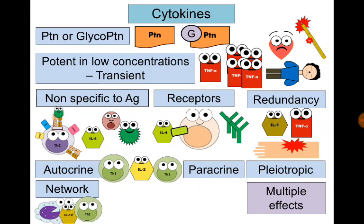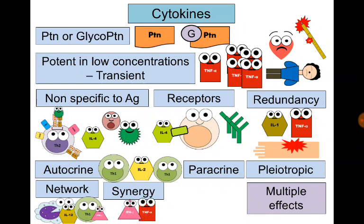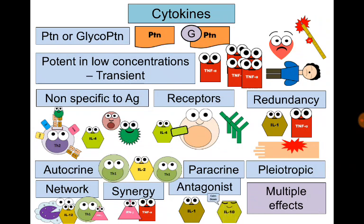An example is the action of interleukin-12 produced by macrophages. Interleukin-12 activates the T helper 1 cell to produce interferon gamma, which activates macrophages, and so on. They can work in synergy, such as the synergistic combination between interferon gamma and tumor necrosis factor alpha in activating macrophages. They can also work as antagonists, like interleukin-1 which is pro-inflammatory and interleukin-10 which is anti-inflammatory.